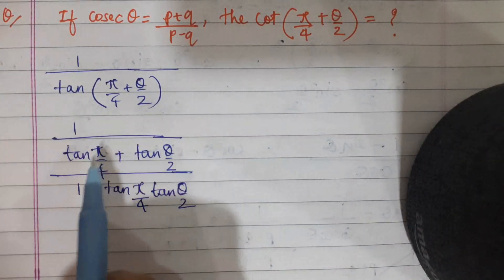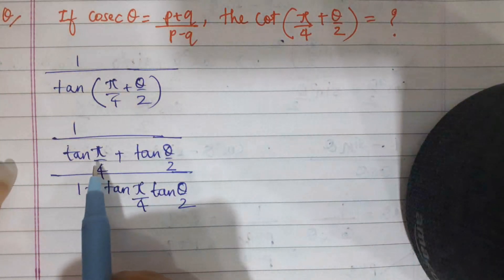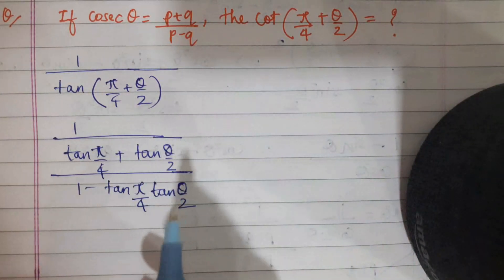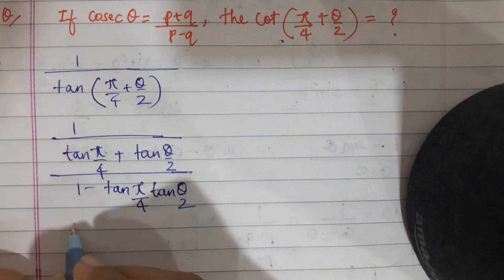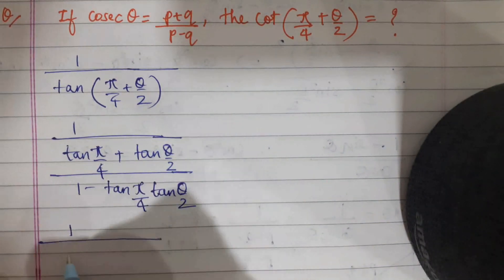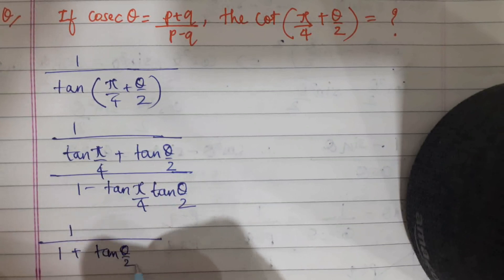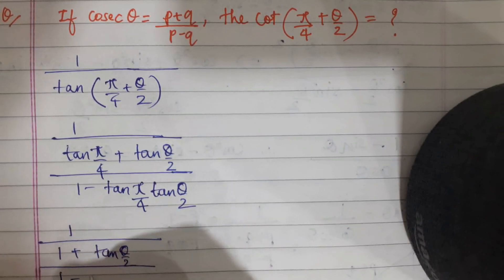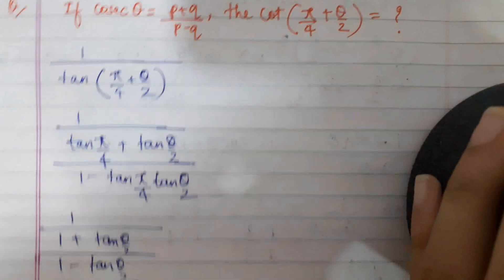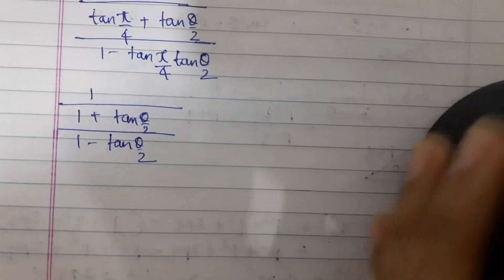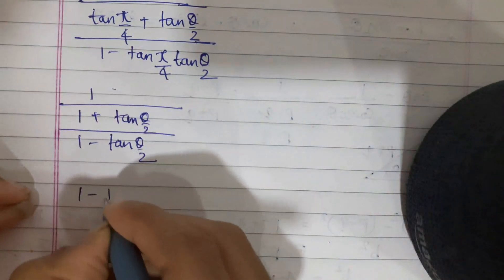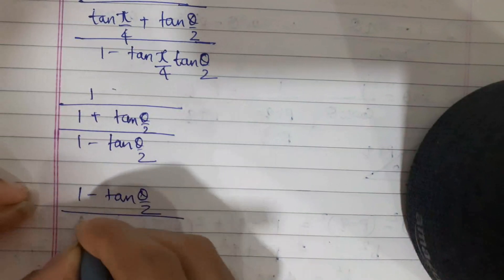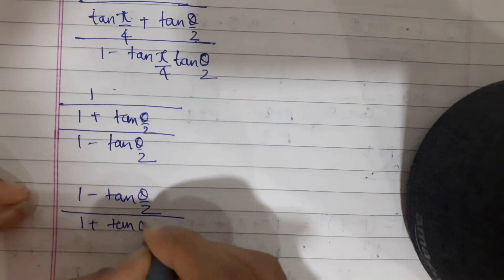We know π/4 is 45° and tan 45° is 1. So we can write this as 1 / [(1 + tan(θ/2)) / (1 - tan(θ/2))], which simplifies so that the expression becomes (1 - tan(θ/2)) / (1 + tan(θ/2)).